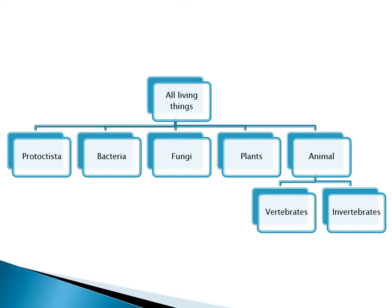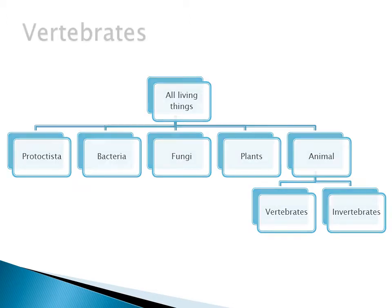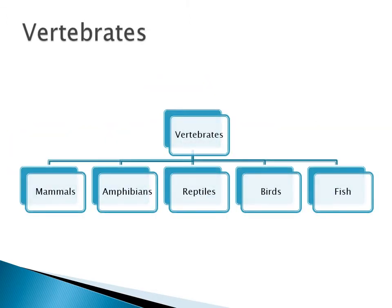If we look at all the different groups and organisms, we can divide them into different sections. We mentioned last day we have Protoctista, bacteria, fungi, plants, and animals. Animals can be divided into vertebrates and invertebrates. Last day we talked about mammals, amphibians, reptiles, birds, and fish — hopefully by now you know the characteristics and examples of each of those groups. The vertebrate section is quite an easy section.